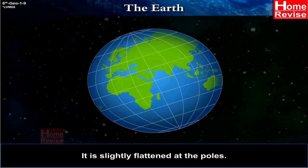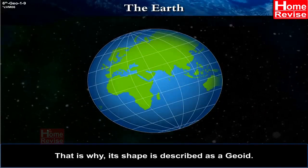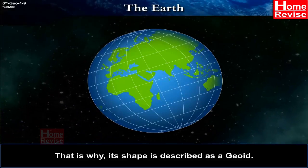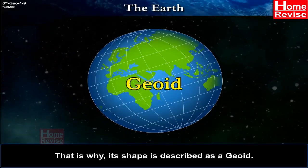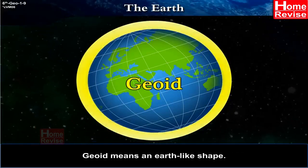It is slightly flattened at the poles. This is why its shape is described as a geoid. Geoid means an Earth-like shape.